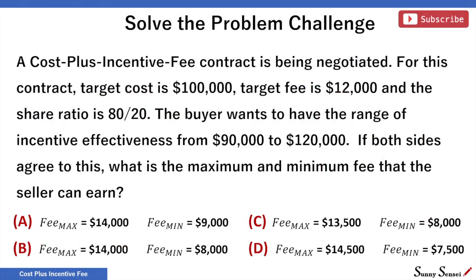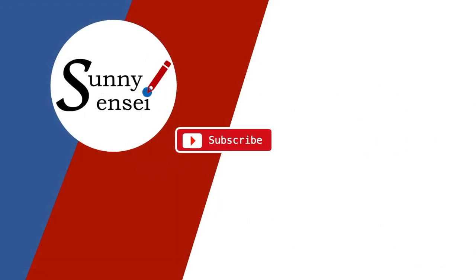Finally, solve the problem challenge. A cost plus incentive fee contract is being negotiated. For this contract, target cost is $100,000, target fee is $12,000, and the share ratio is 80 to 20. The buyer wants to have the range of incentive effectiveness from $90,000 to $120,000. If both sides agree to this, what is the maximum and the minimum fee that the seller can earn? There are four choices: A, B, C, and D. Solve the problem and let me know your choice in the comments. All the best from Sunny Sensei. Thank you.